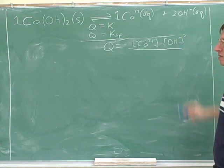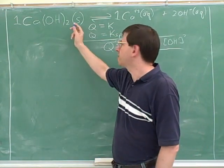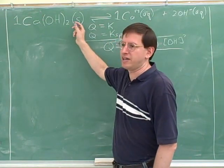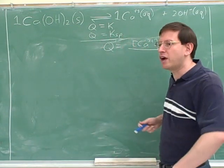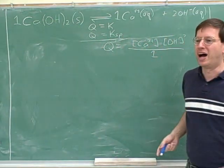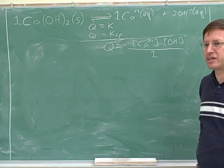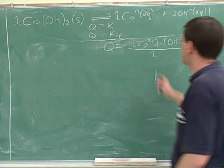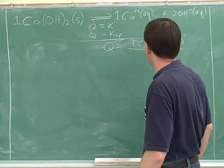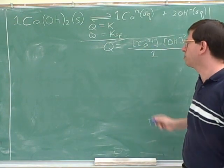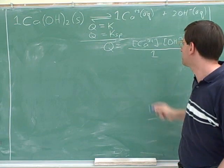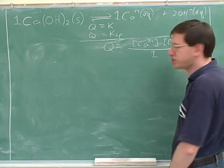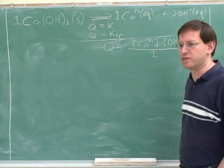That gives us the exponent of 2 on hydroxide in the Q expression. On the starting material side, all we have is a pure solid, so we don't include it — it counts as 1. That is the Q for this reaction. It's crucial to write this correctly because we need it in almost every problem. Setting this Q equal to the Ksp gives us an equation we can solve for whatever the problem is asking.